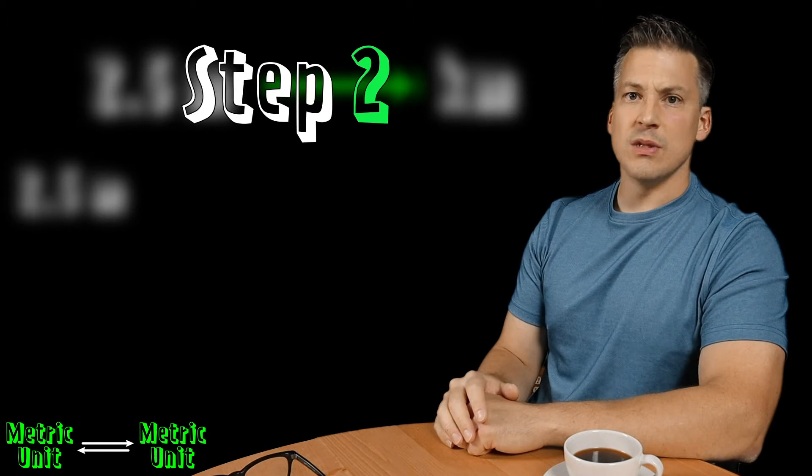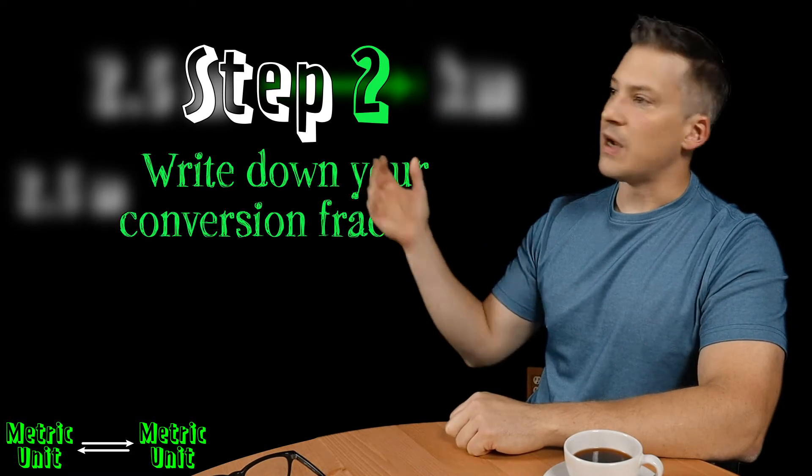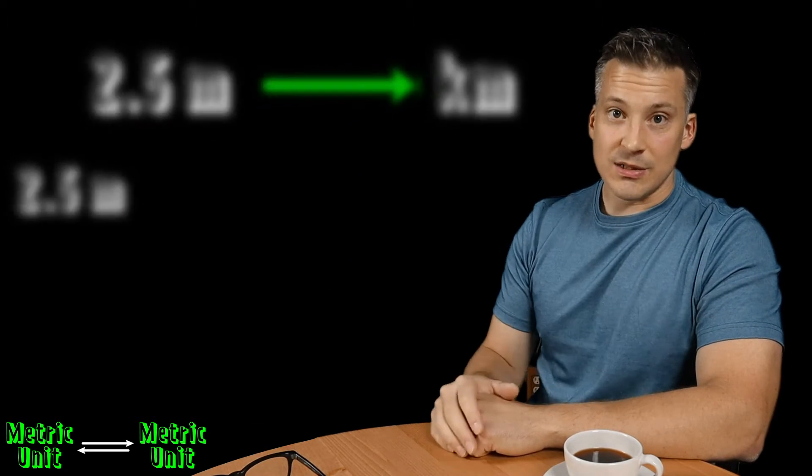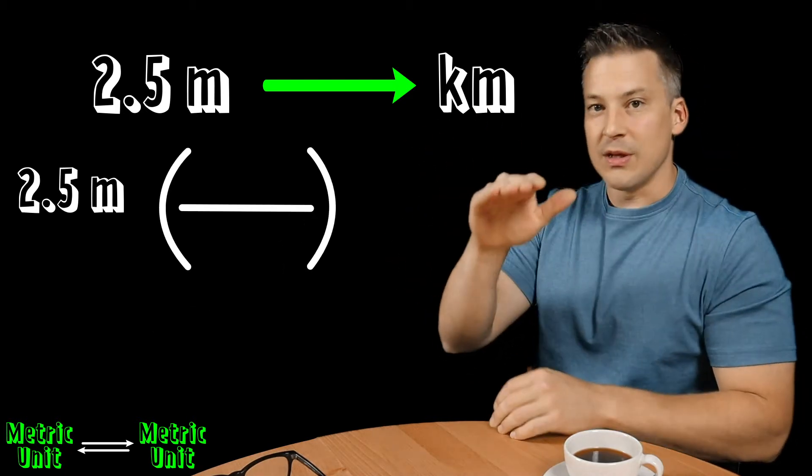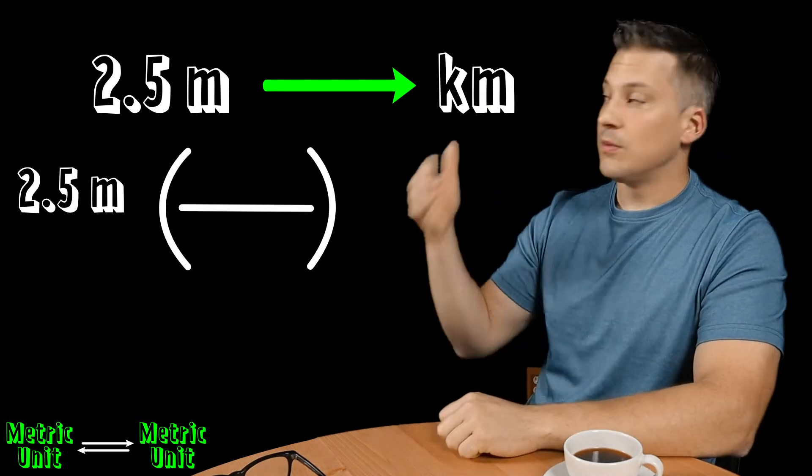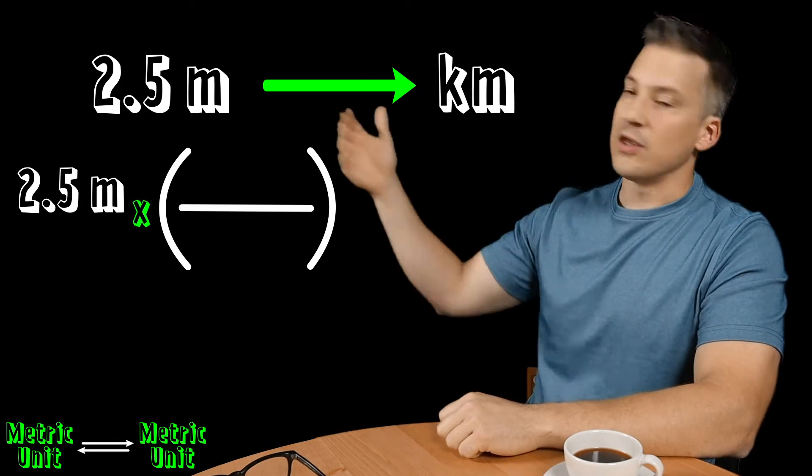The second step is going to be to write down your conversion fraction. Now all that is, it's just a parenthesis with two parentheses with a division sign. And that's it. And you're going to multiply that by your given value.